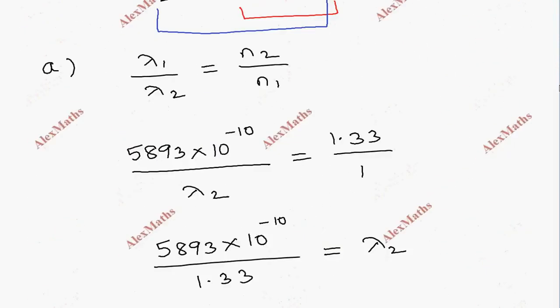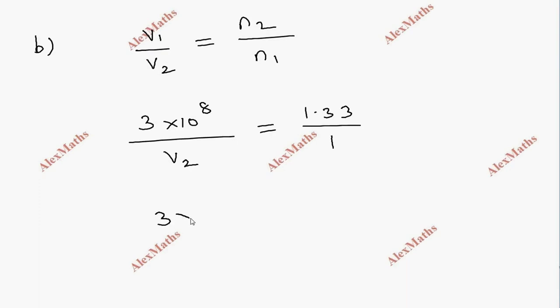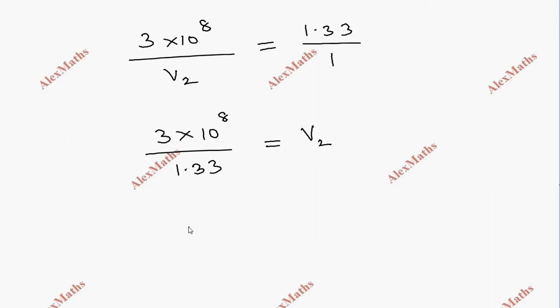v1 is c, which is 3 times 10 power 8 meters per second. So v2 equals 3 times 10 power 8 divided by 1.33. Simplifying, v2 equals roughly 2.25 times 10 power 8 meters per second.